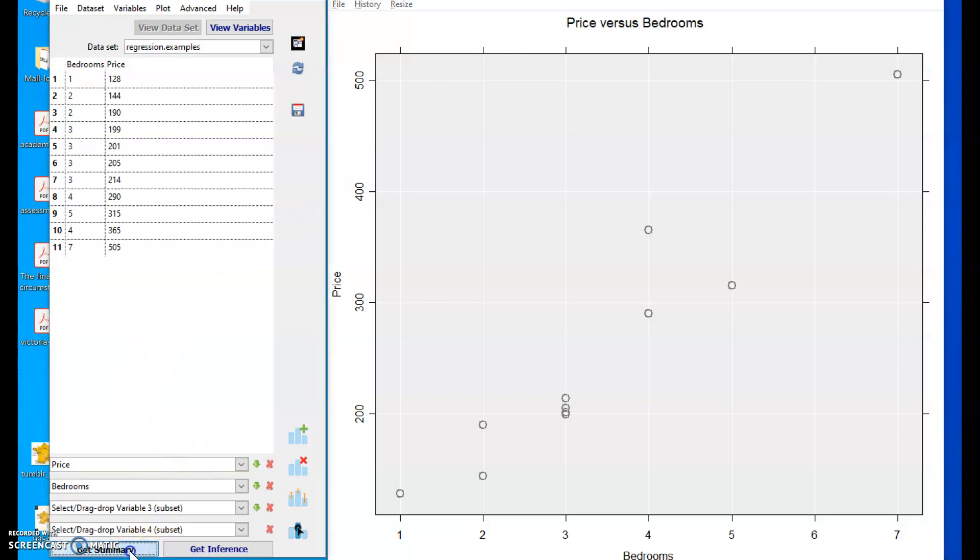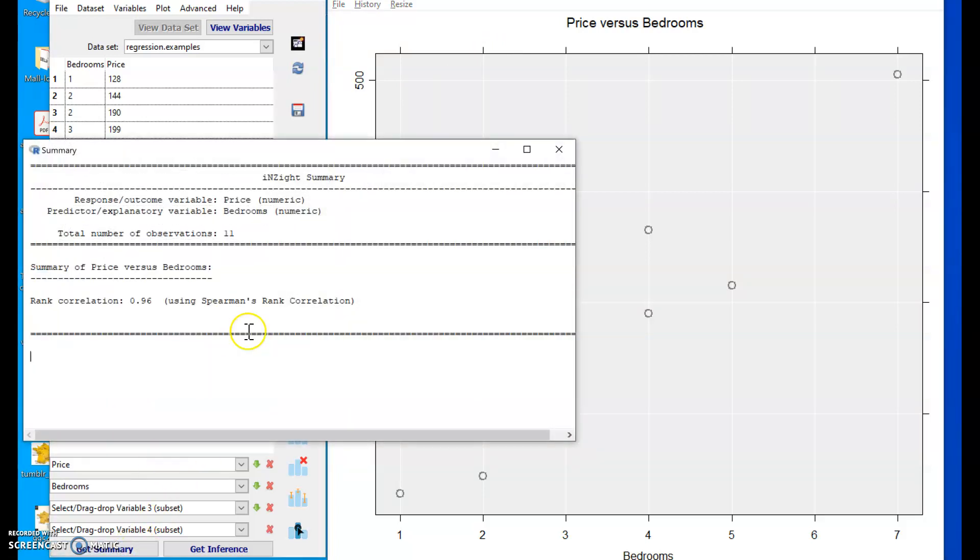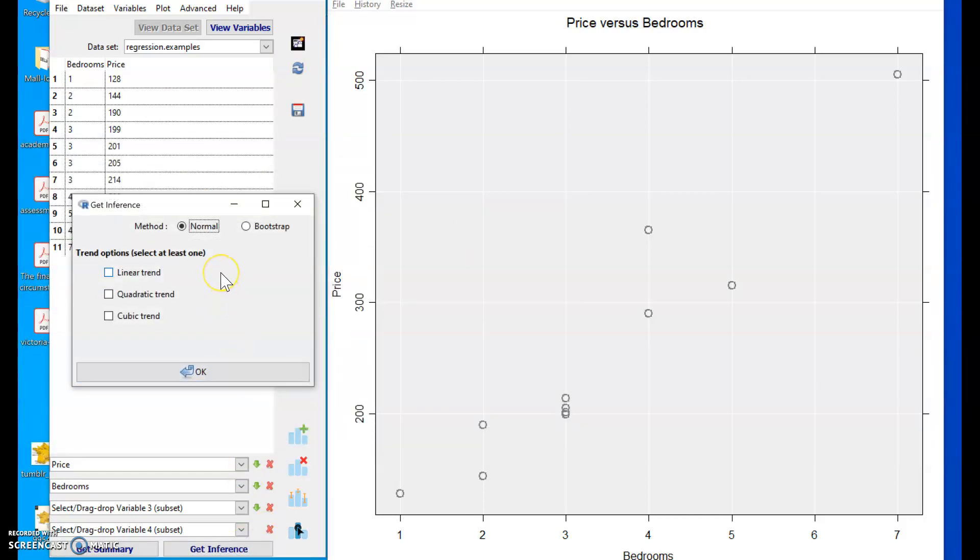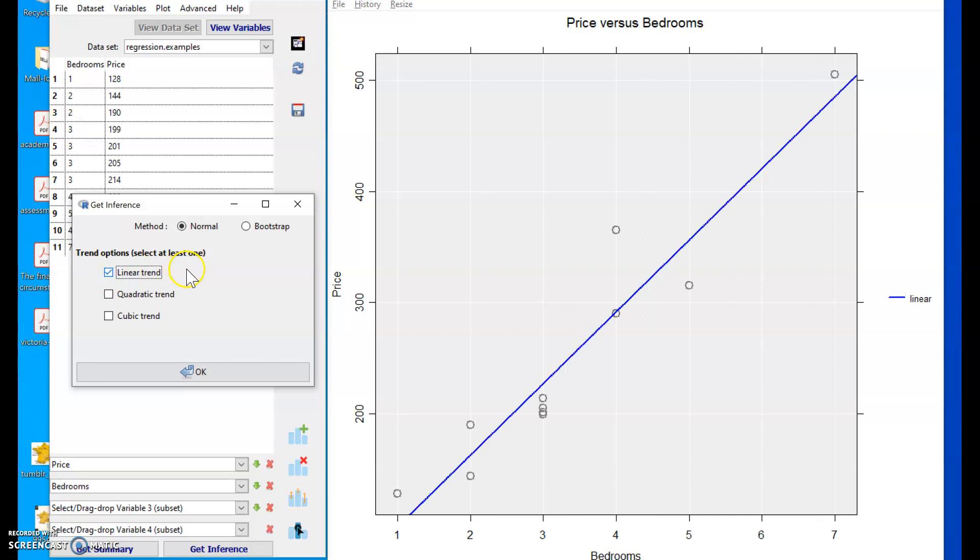If I click get summary here, it calculates a correlation for me. If I click get inference, later versions of Inzite now include this option to estimate a linear trend between them.